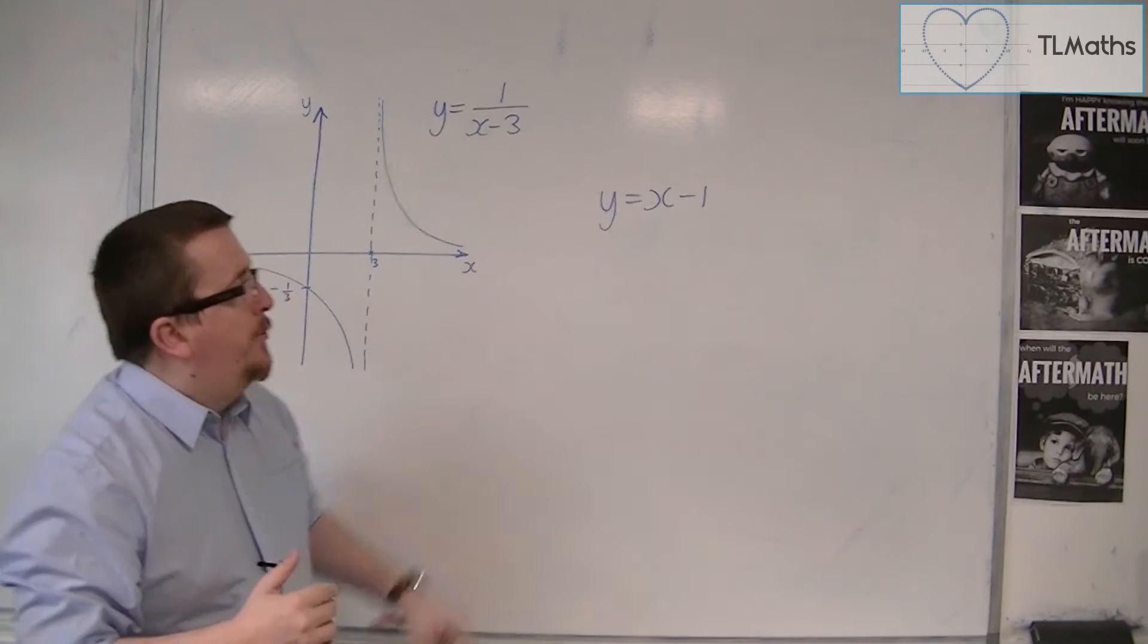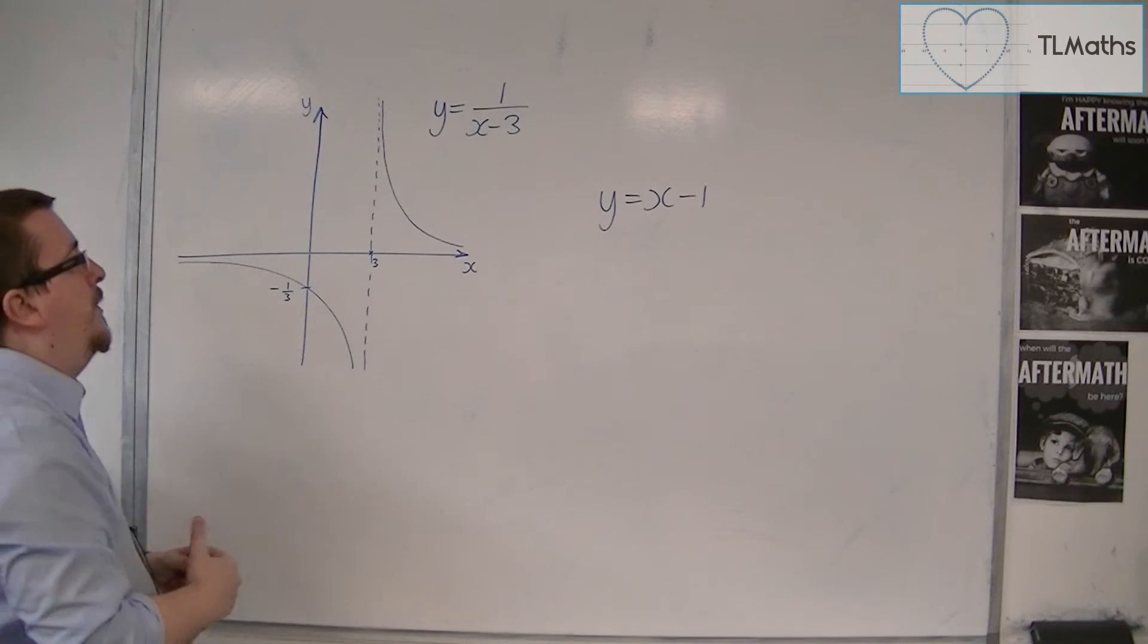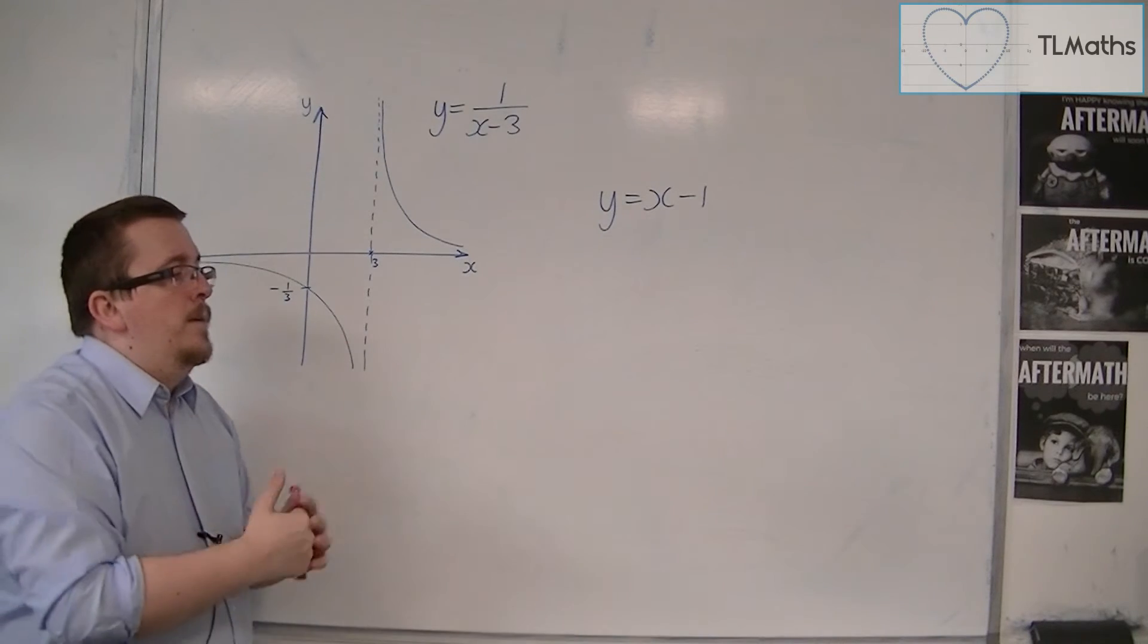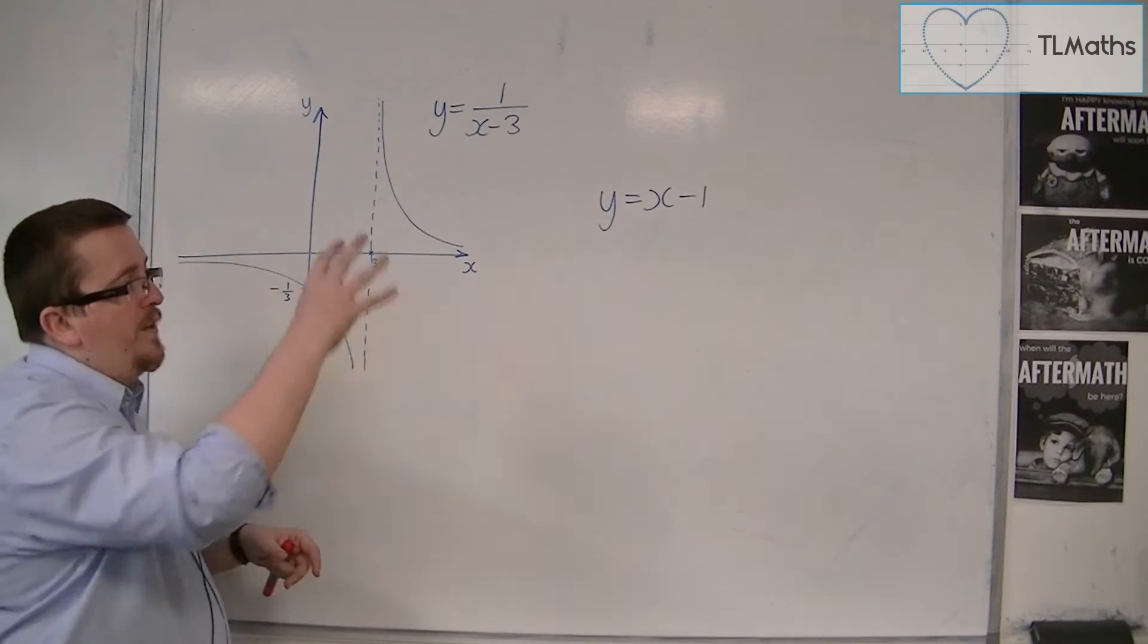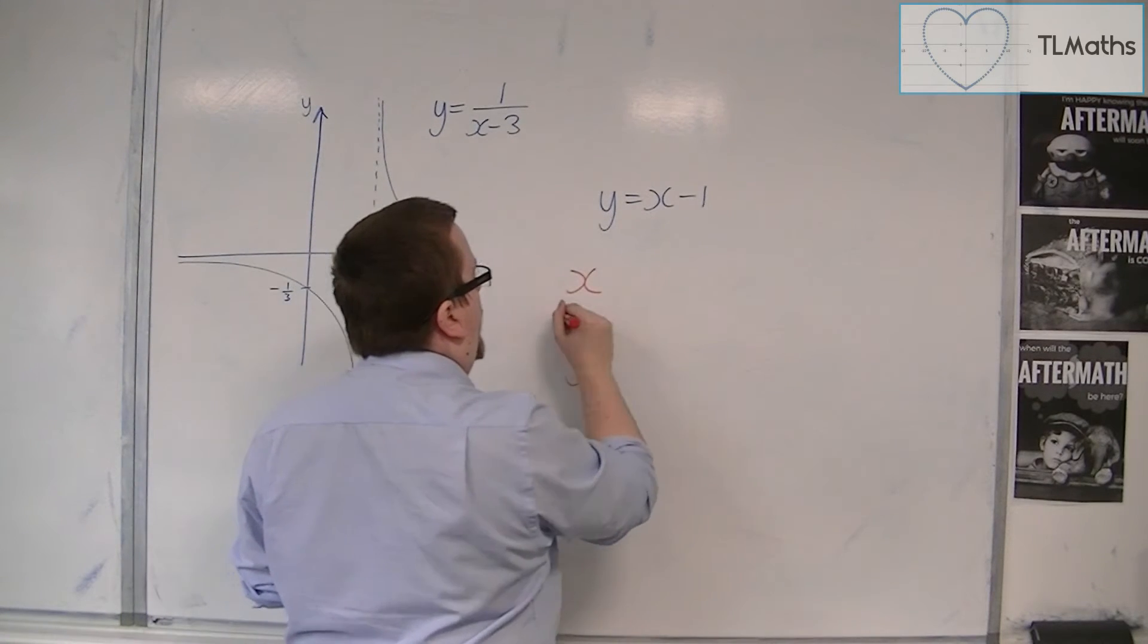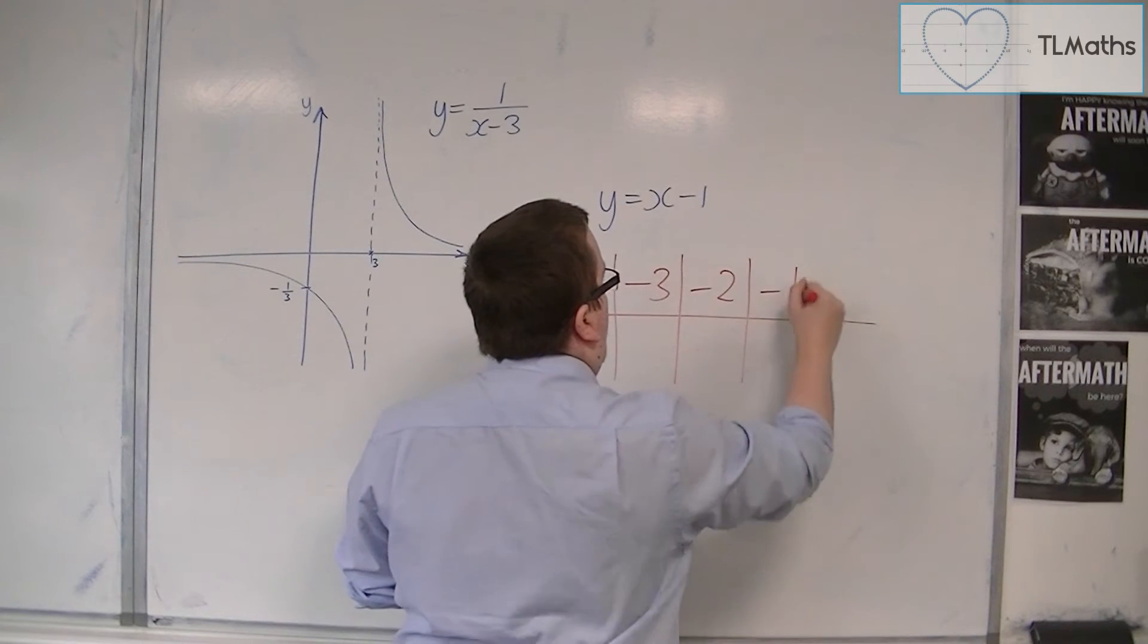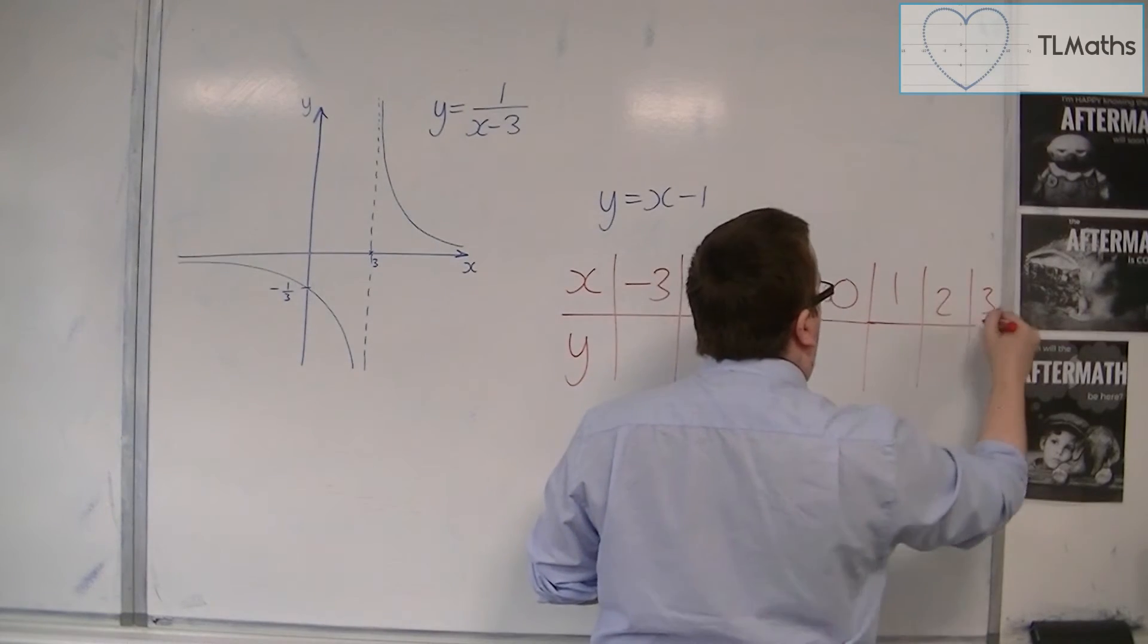We're now going to draw on y equals x minus 1. Now I can't do this incredibly accurately, because I'm working on just a whiteboard. But we should be able to draw straight lines and quadratics. Quadratics, you will most definitely want to have a little table drawn. So we're going to draw a table for this as well. So you'll want to choose some x values to put into your table. So we might start from minus 3, for example.